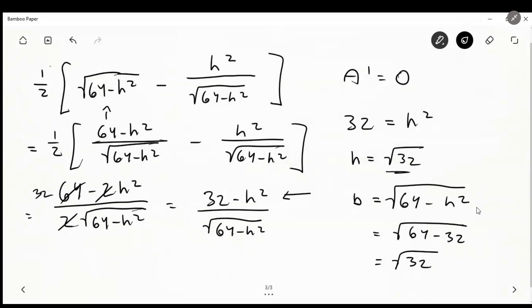And it wants us to give a maximum area. So the formula for our area is 1 half base times height. Now that we solved for base and height, we can say it's 1 half radical 32 times radical 32, radical 32 squared over 2. And that's 16. So this is our final answer.